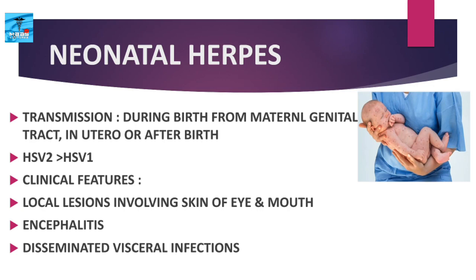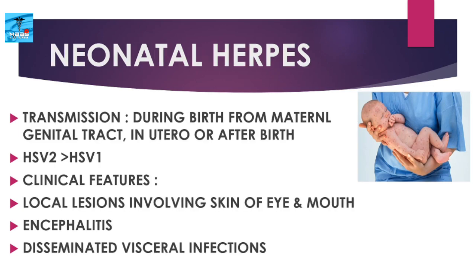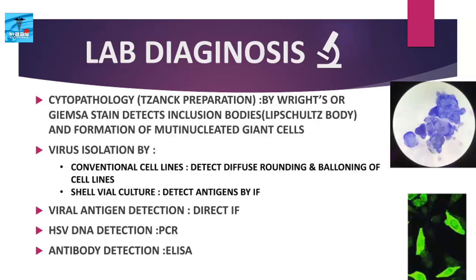HSV is one of the most common causes of congenital infections, alongside other TORCH agents. The newborn most commonly acquires HSV infection during birth from the maternal genital tract, though transmission can also occur in utero or after birth. HSV2 is more common than HSV1 as a cause of neonatal herpes. Babies are almost always symptomatic, presenting with local lesions involving skin, eye, and mouth; encephalitis with higher mortality and permanent neurological impairment if survived; or disseminated disease involving multiple organs including the CNS. Neonates are at higher risk of disseminated visceral infections.